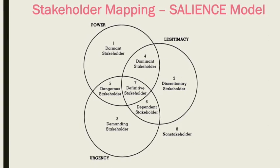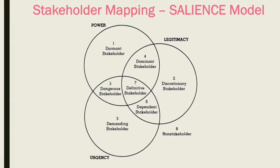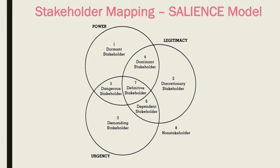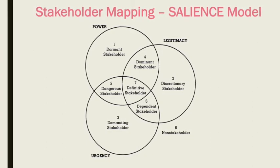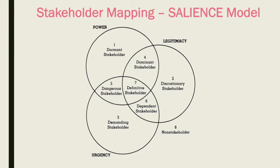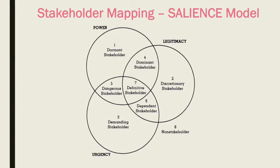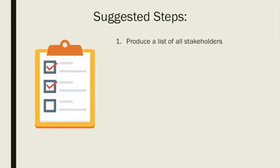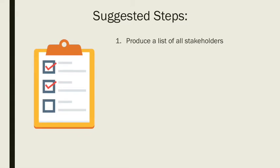All actors that can have an interest in the company or that can be affected by it are part of our stakeholder map. The scheme will help us not only identify who those actors are but also how to organize them. As a first step, we suggest making a list of all actors that are of interest to the company.